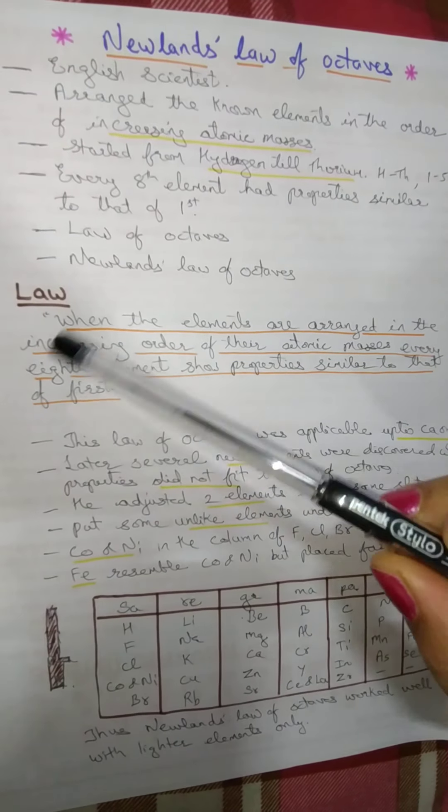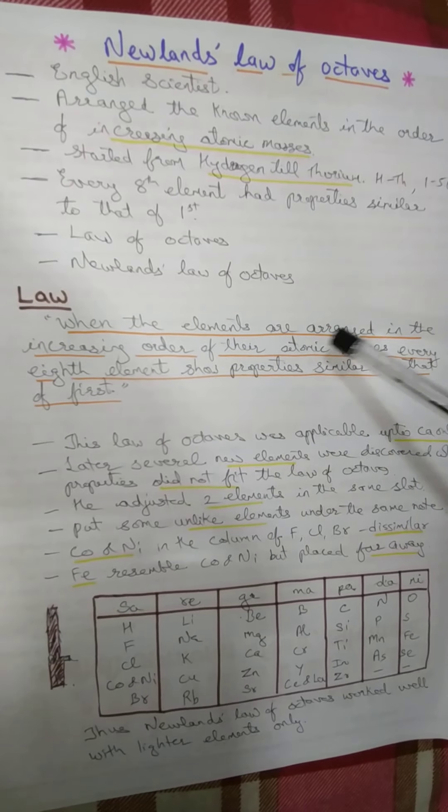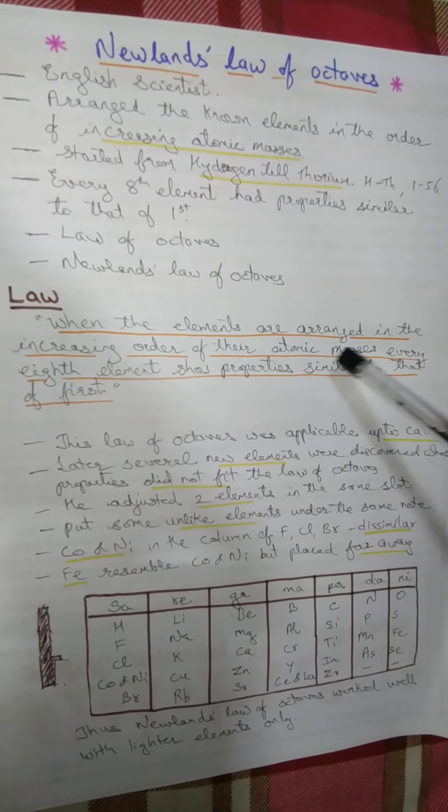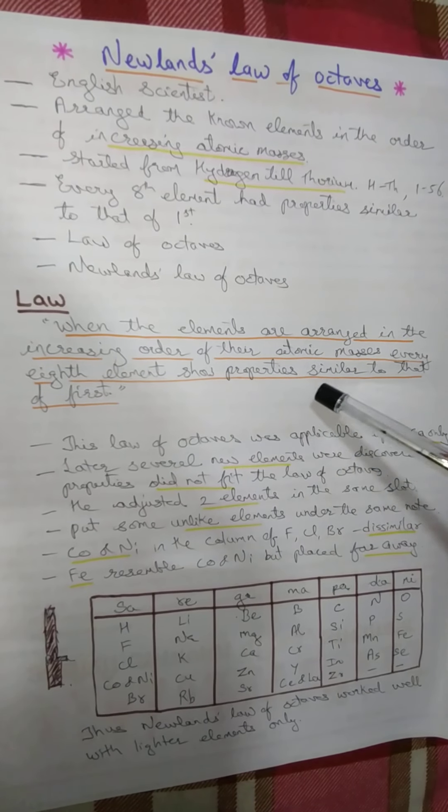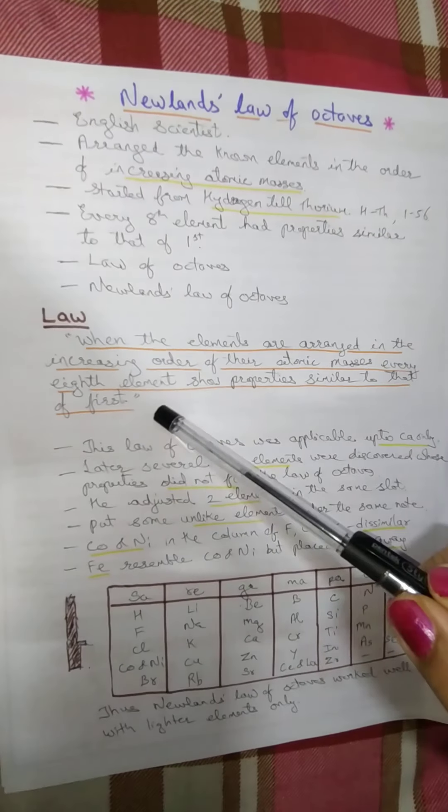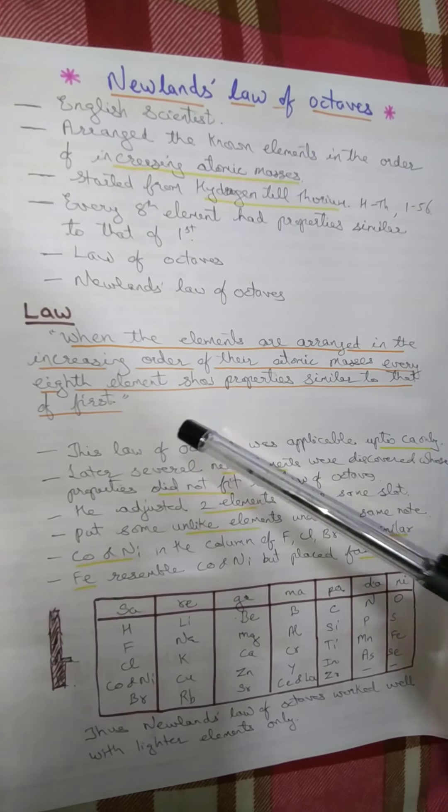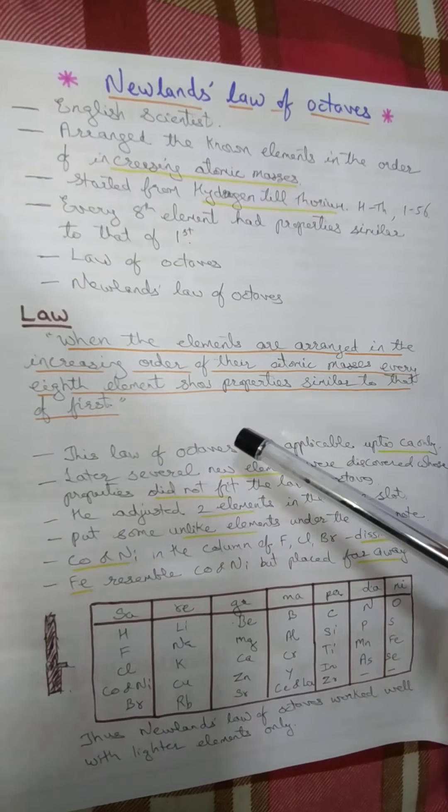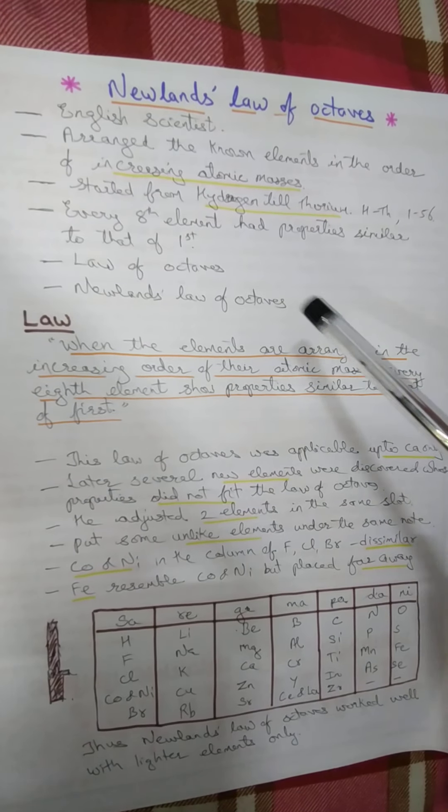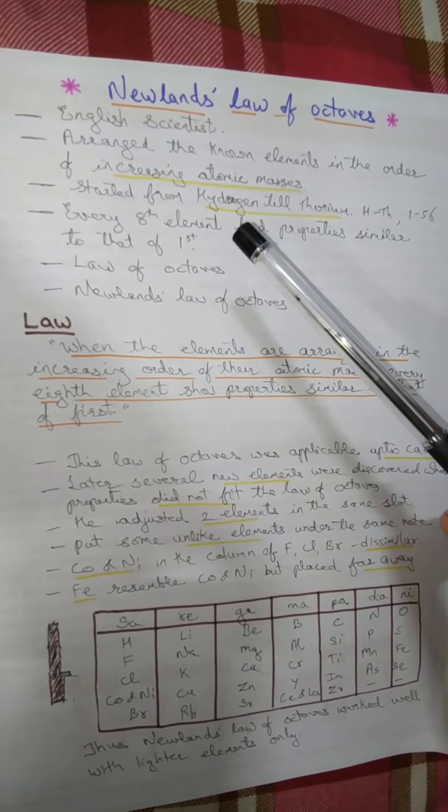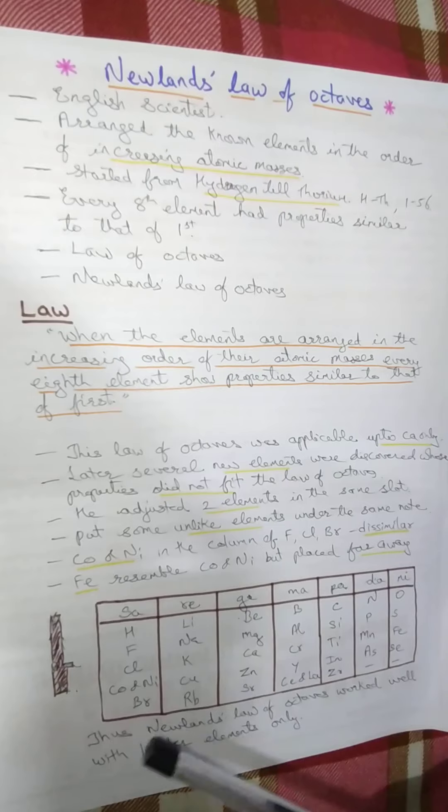Let us see the wording of the law. The law says when the elements are arranged in the increasing order of their atomic masses, every 8th element shows properties similar to that of first. It means that like the music notes, sa re ga ma pa, first to seven are different and then the 8th shows properties similar to that of first. Let us see it with the help of example.